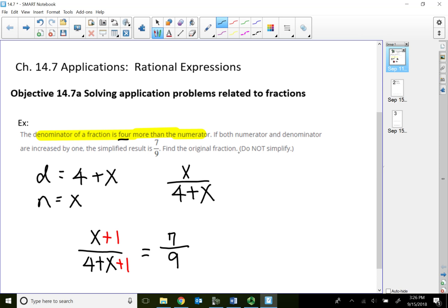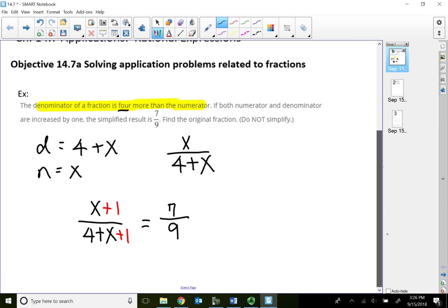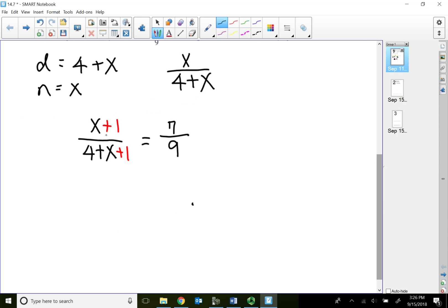Find the original fraction. So basically, here I actually have two terms. Both are fractions, so I'm going to use my cross product to do it. By the way, this four plus x plus one is really five plus x. So when the original numerator and denominator increase by one, then the simplified fraction is going to end up to be seven over nine.